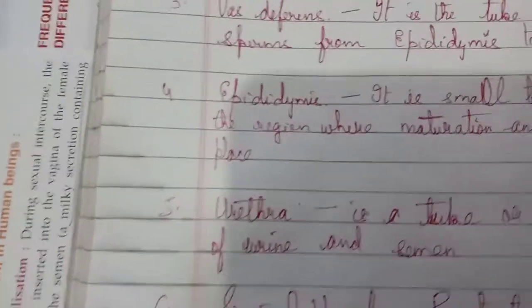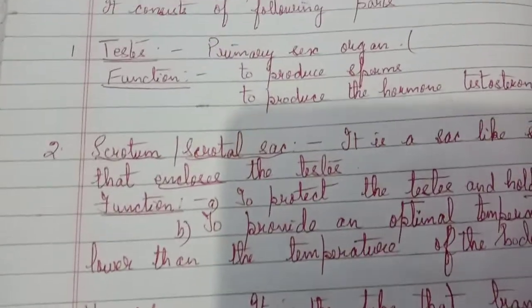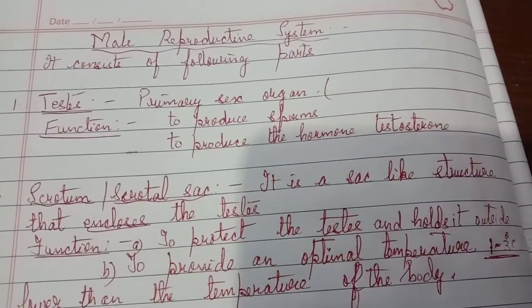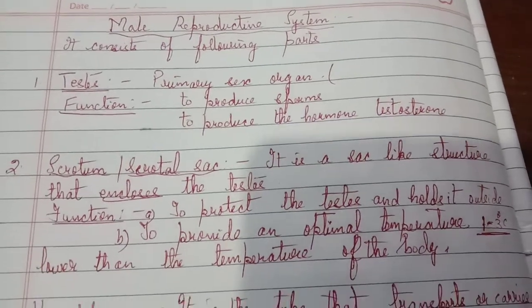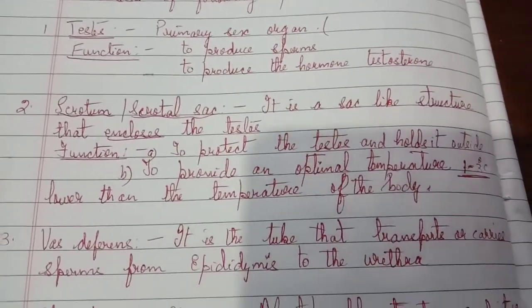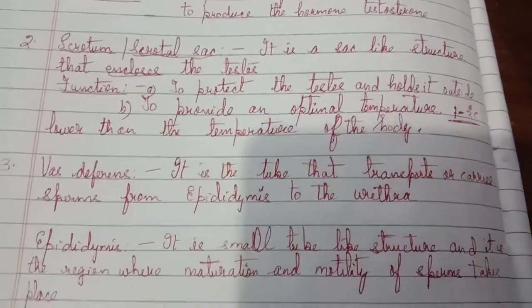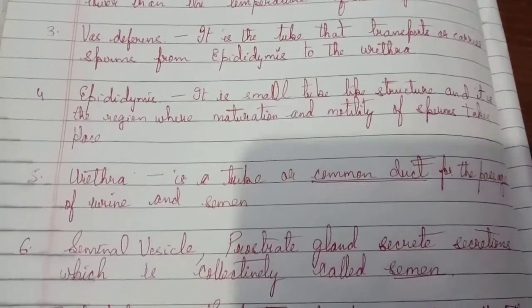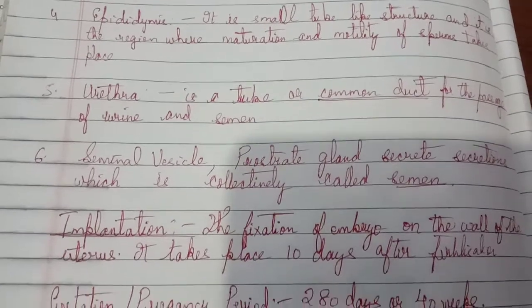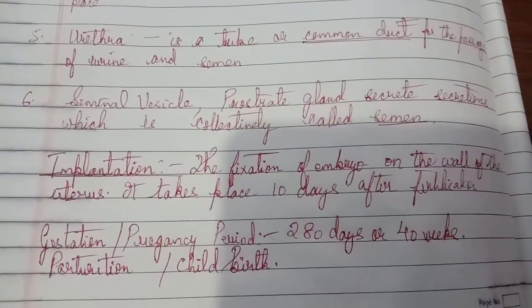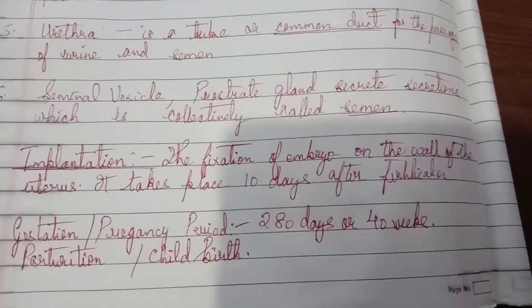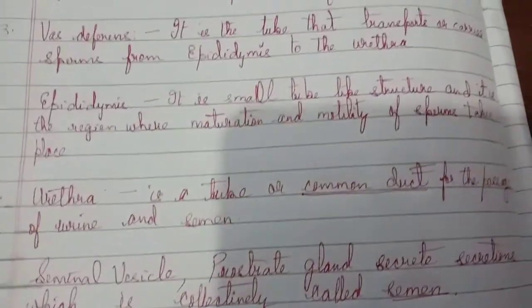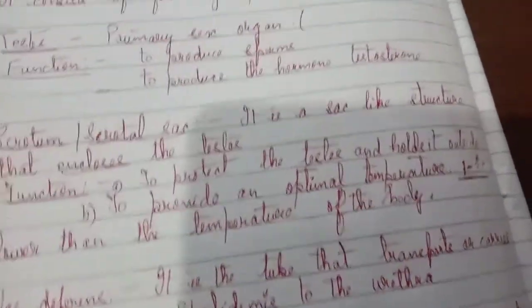So here are some terms that you should know. So the diagrams of the male and the female reproductive system is important. You may be asked to draw and label it of the different regions. Labeling the parts you may be given to draw or you may be, the diagram may be given and you may be asked to label it accordingly with the functions.